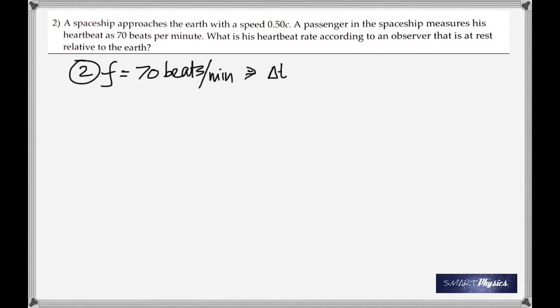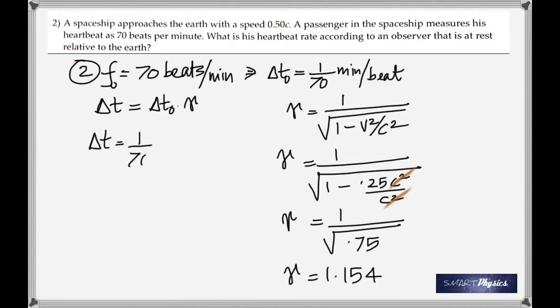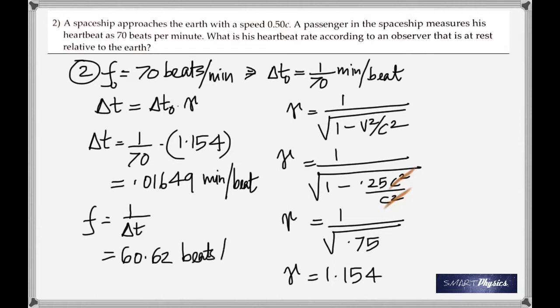Now, a heartbeat is a frequency. It's given us 70 beats per minute, from which the time is the reciprocal of the frequency, so 1 by 70 minutes per beat, and use the formula for time dilation. Get the value of gamma. Obviously, the 0.25c squared is because it's moving at 0.5, and it's a square, and calculate gamma. Once you get gamma, put it into the equation, delta t is delta t naught gamma. You got the value of gamma, and then you find delta t, and finally take the reciprocal of that to give you 60.62 beats per minute.